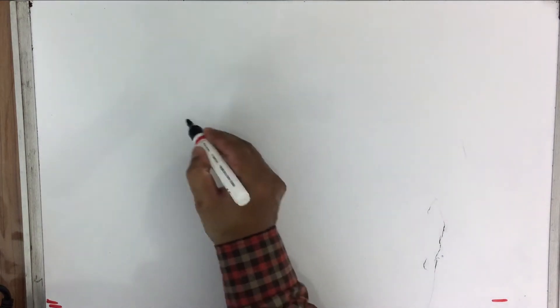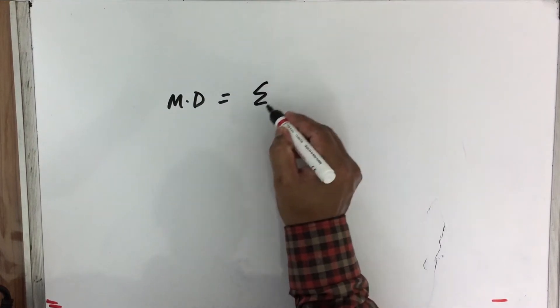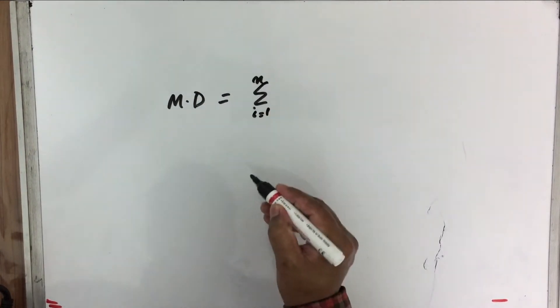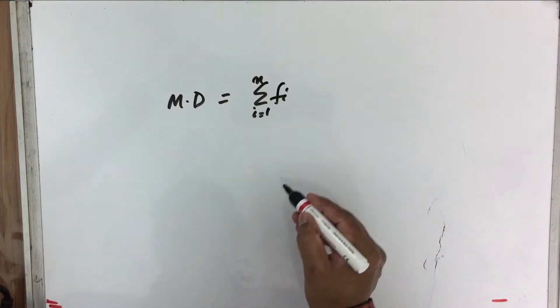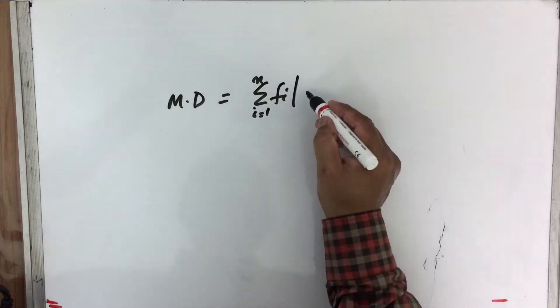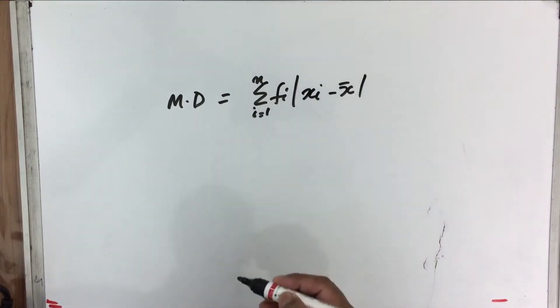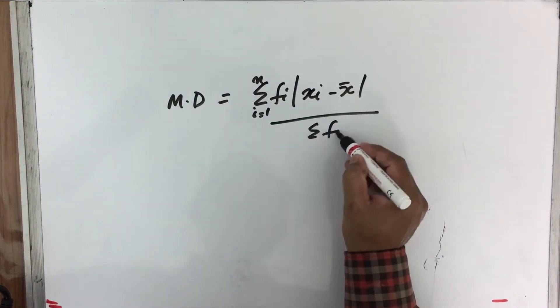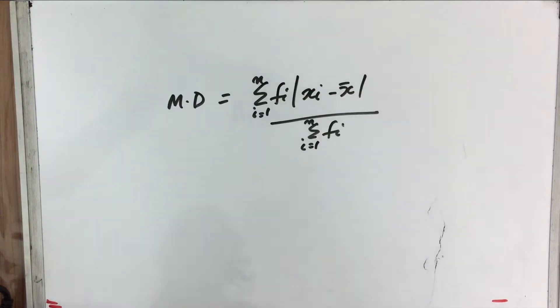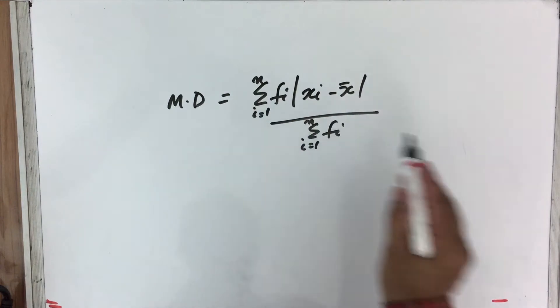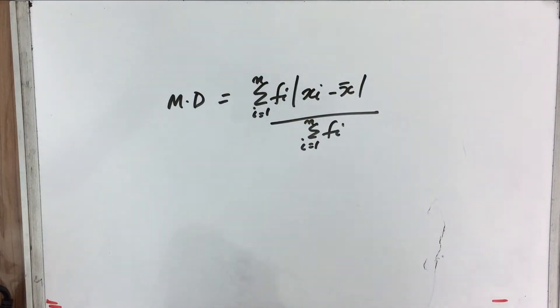In earlier sessions, we have been trying to understand mean deviation as one of the measures of dispersion. Now let us understand how to calculate mean deviation for a continuous distribution. We will use the same formula: mean deviation equals the summation of FI multiplied by the modulus of XI minus X-bar, divided by the summation of all FI values, where I goes from 1 to N.